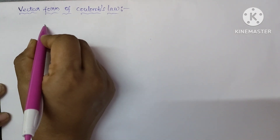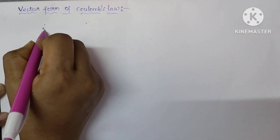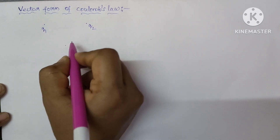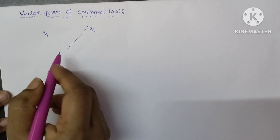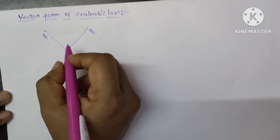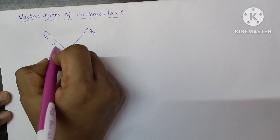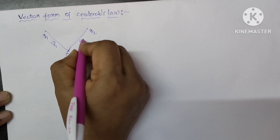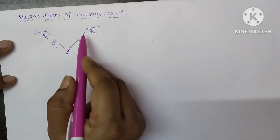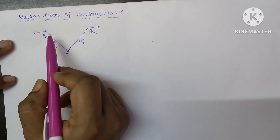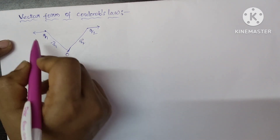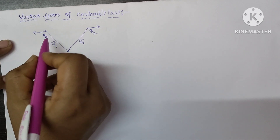For that, I am considering two point charges, let's say Q1 and Q2, whose position vectors from the origin be R1 and R2. So both the charges are positive. If one is positive and the other one is negative, the force between them is attractive force. Let us consider here both the charges are positive charges.